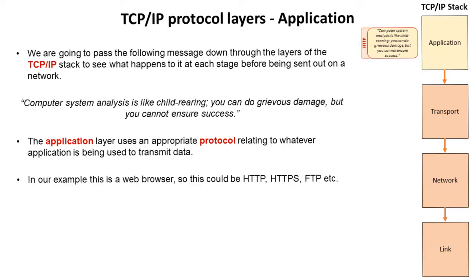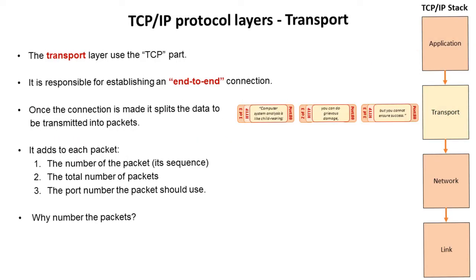We then pass this down to the transport layer. The transport layer is the layer which uses the TCP part. It's responsible for establishing an end-to-end connection. Once the connection is made it splits the data to be transmitted into packets. Typically a data transmission can be quite large and it will split it into a number of packets. It adds to each packet the number of the packet, the total number of packets, and the port number the packet should use. Think of it like pass the parcel — this extra information has been wrapped around the information which was already wrapped in the application layer around the original message.